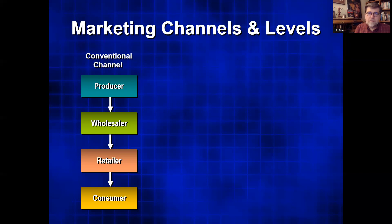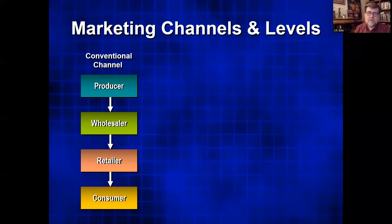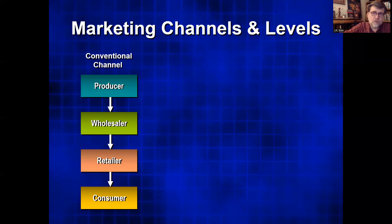You go to a store, and that store may not have purchased directly from the producer — they may have gone through a wholesaler. One of the most common examples would be food. In New Jersey, one of the big food wholesalers is Gargiulo Foods — they have lots of warehouses and trucks, handle logistics, gather different types of food, produce, and meat, and distribute them to various smaller markets and stores. That's the conventional, traditional type of distribution channel.